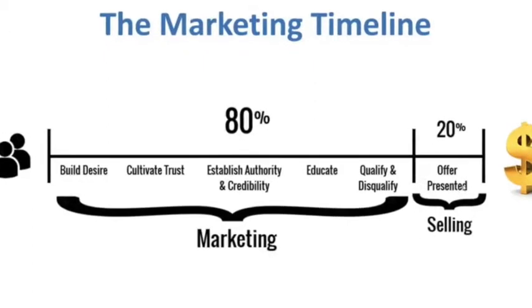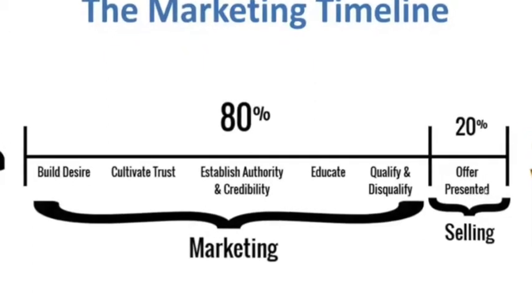Now let's jump back to our 80% — building desire. Determine what questions your audience might be asking before they buy. For example, 'What are the best travel destinations for young couples?' You can answer that by saying X destination is best for young couples who want this, and Y destination is best for other young couples who want that.